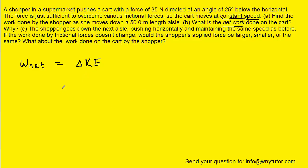If a cart or any other object is moving at constant speed, of course, that means its final velocity is equal to its initial velocity, which means that its final kinetic energy is equal to its initial kinetic energy. And when the final and initial kinetic energies are the same, the change in the kinetic energy will equal zero, and that means that the net work done on the cart in this scenario is zero joules.